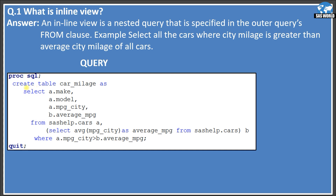Here is the query. We create a table car_mileage, selecting three variables: make, model, and MPG_City. The variable average_MPG is coming from an inline view. In the FROM clause, we use sashelp.cars with alias A, and a subquery — select average(MPG_City) as average_MPG from sashelp.cars — with alias B. This subquery in the FROM clause is called the inline view. Then we filter where A.MPG_City is greater than B.average_MPG.